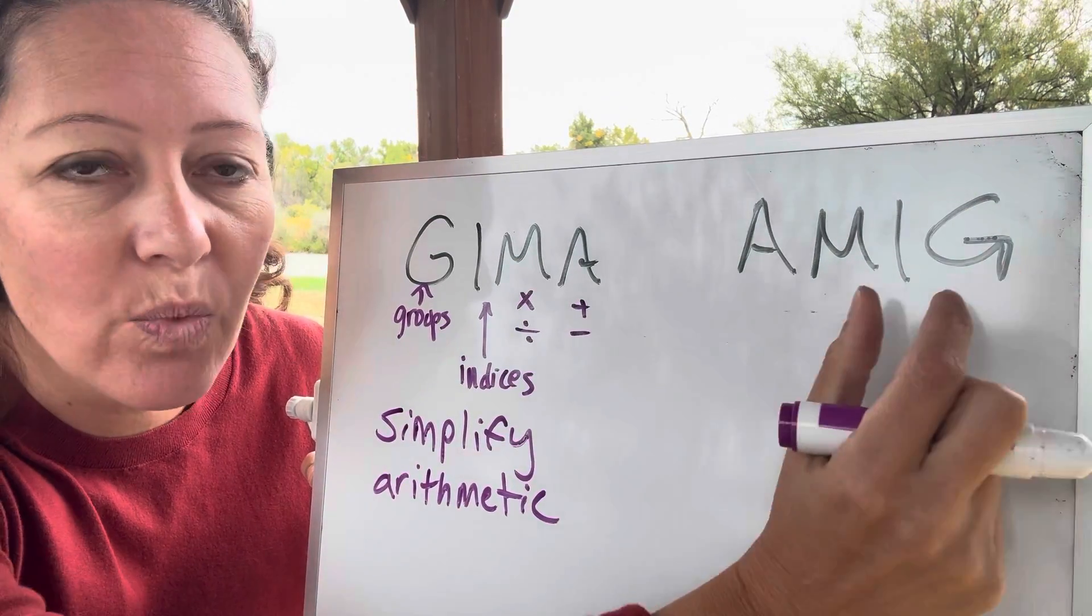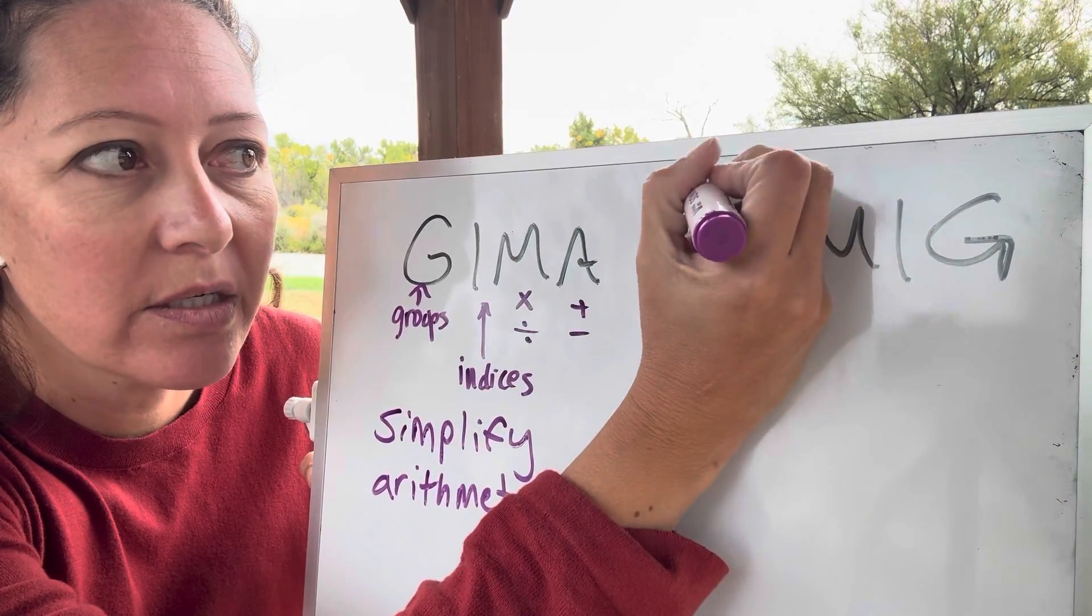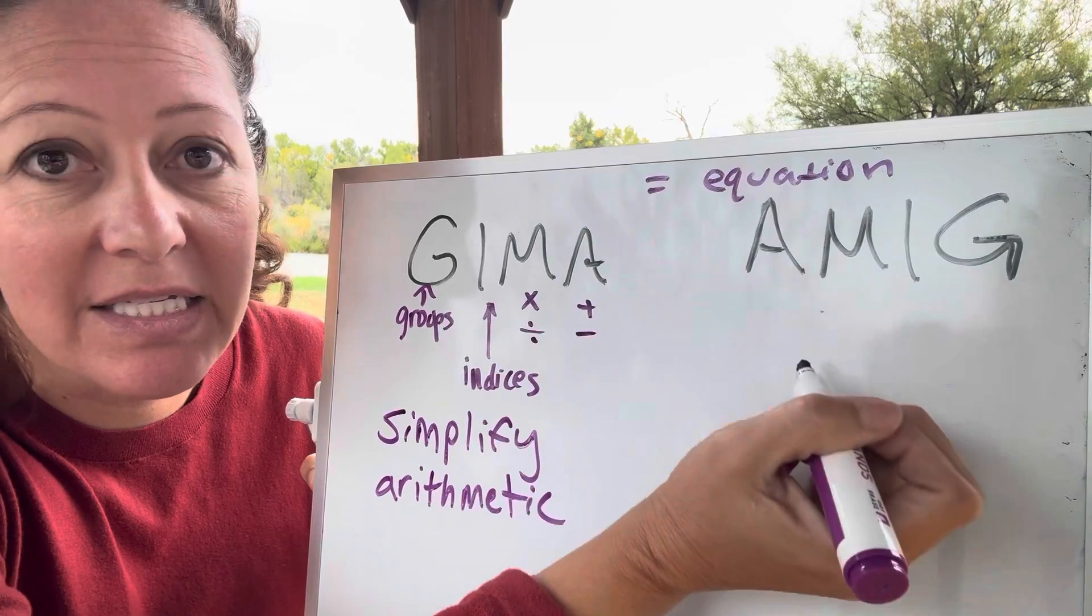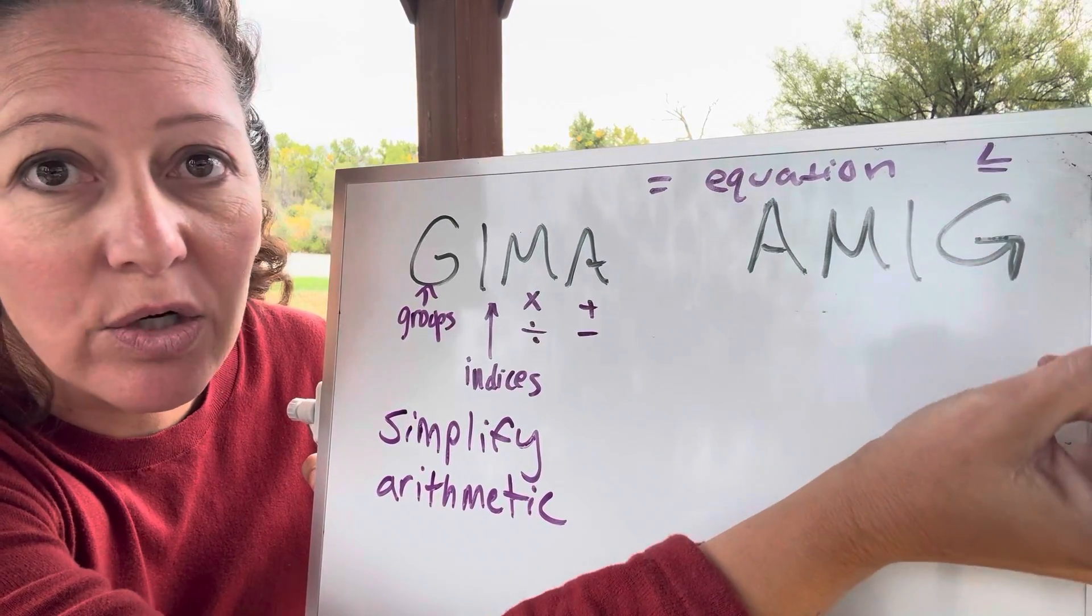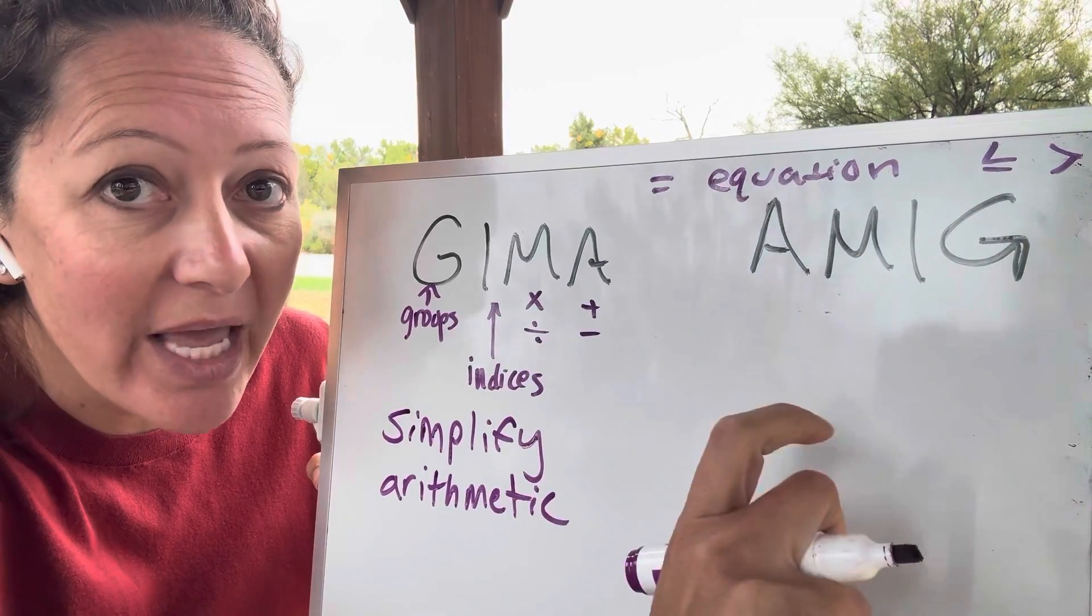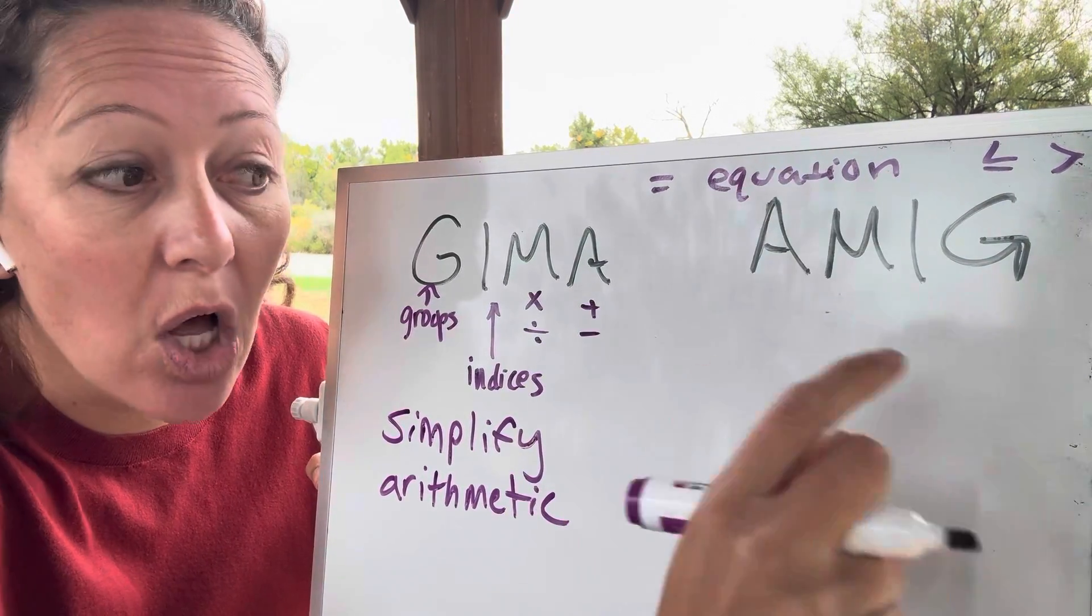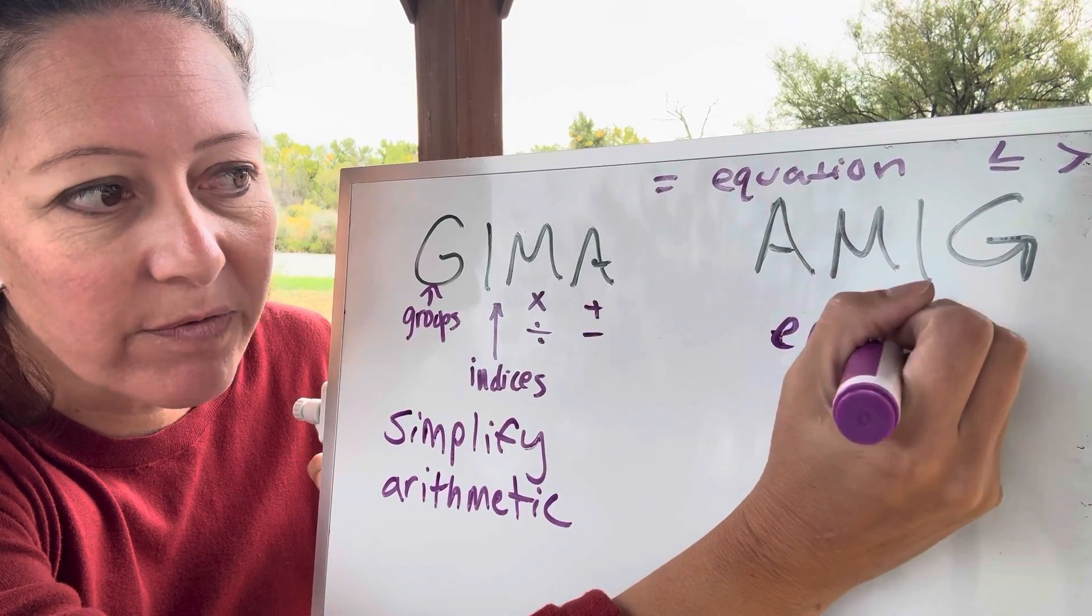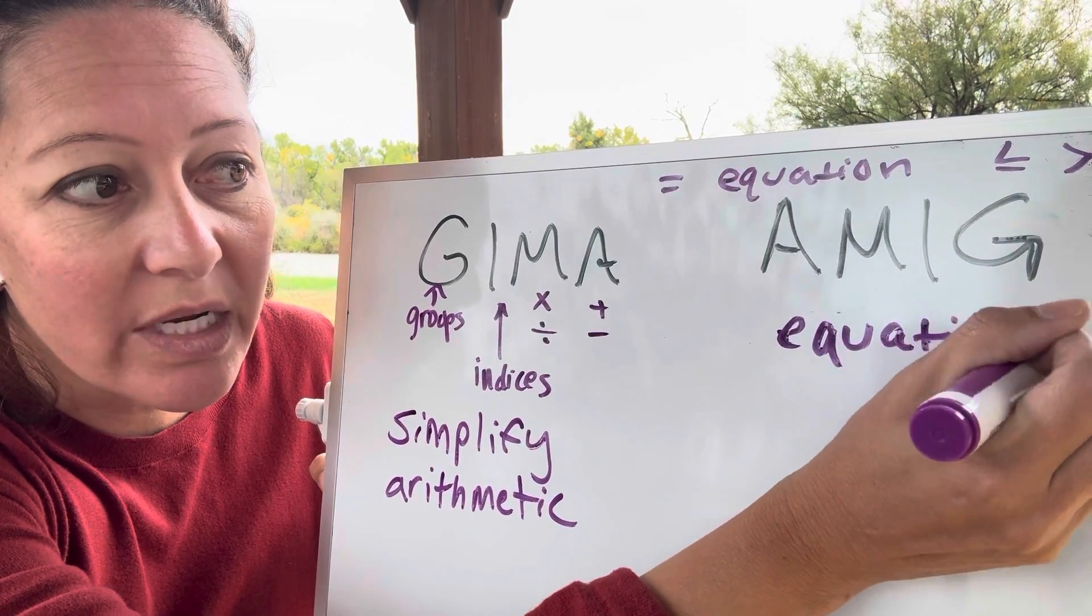And we actually have an equation or an inequality. And so equation, meaning that it has equal signs, or inequalities, of course, are like greater than, less than, stuff like that. When we have that, now we have an equation, and we can actually solve for something. So AMIG is used just for those equations or inequalities.